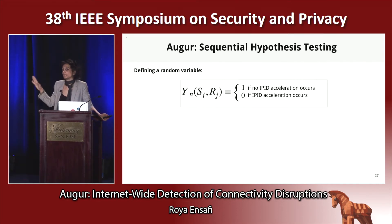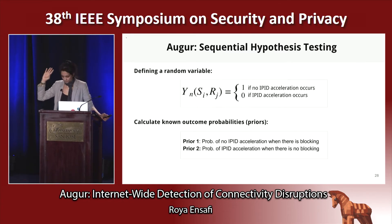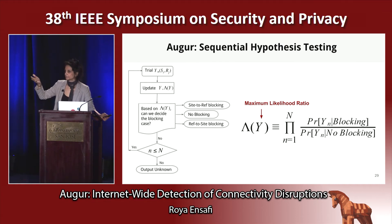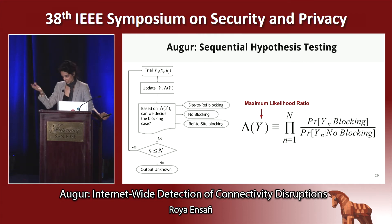I'm going to give you a light version of how Augur uses sequential hypothesis testing — I refer you to the paper for details. Augur adopts sequential hypotheses by first defining random variables that model how IPID accelerates under the perturbation we cause. We also calculate known outcome probabilities, or priors. Putting all together, we can formalize an algorithm that detects the case by collecting one trial, updating the sequence of values for our random variables, and checking the likelihood that the sample belongs to the distribution where blocking happens or does not happen — continuing until we reach the desired statistical significance.